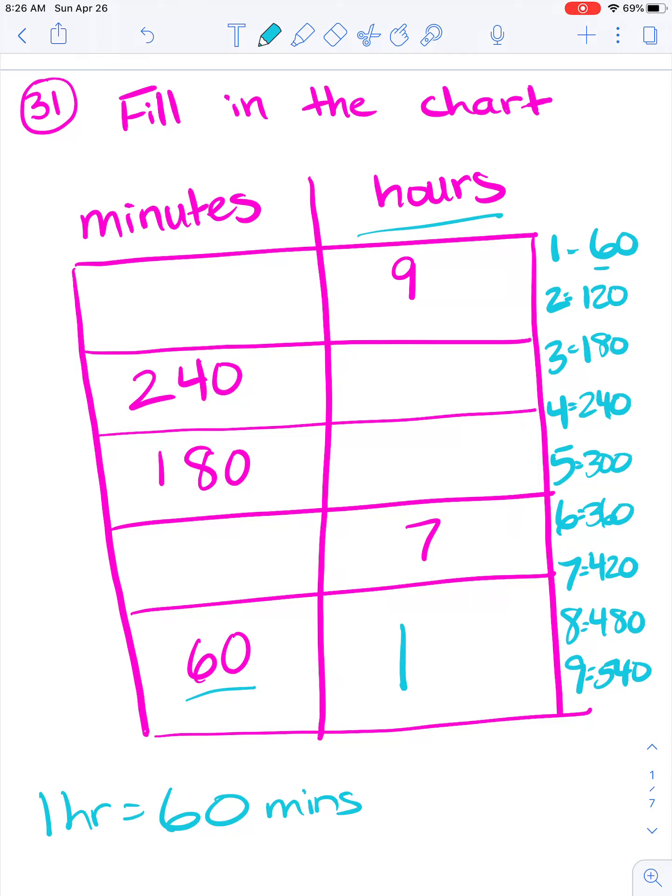So one hour equals 60. Two hours equals 120. Three hours equals 180, and so on. So here we have seven hours. Well, our seven hours answer was 420.